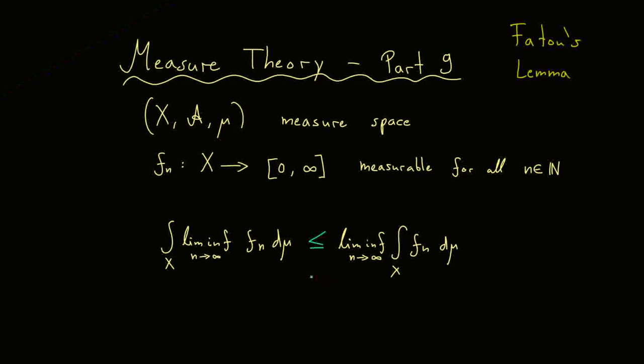And Fatou tells us the left hand side can't be bigger than the right hand side. So you see, the lemma is not so strong as a convergence theorem, but please note that our requirements are very weak. We only need non-negative measurable maps, nothing else. The actual convergence theorem that follows from this claim here is Lebesgue's theorem, which we will consider in the next video.